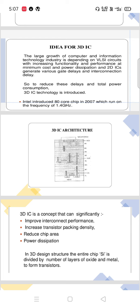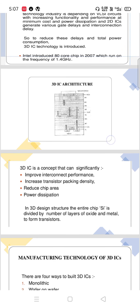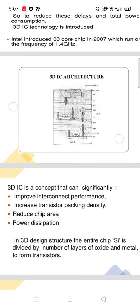Intel introduced an 80-core chip in 2007 which runs on a frequency of 1.4 GHz.